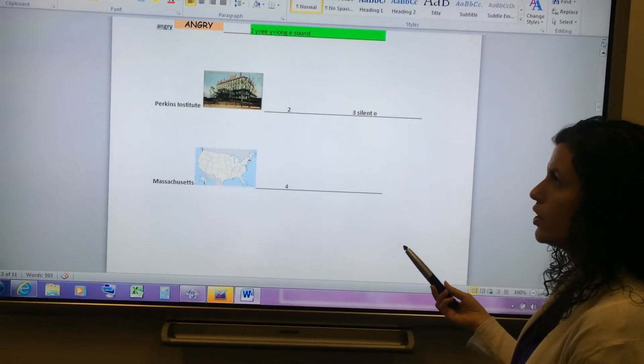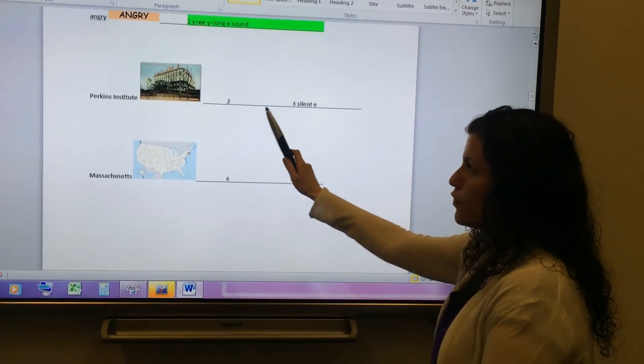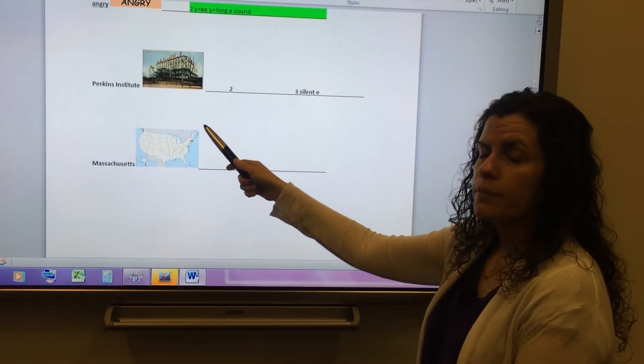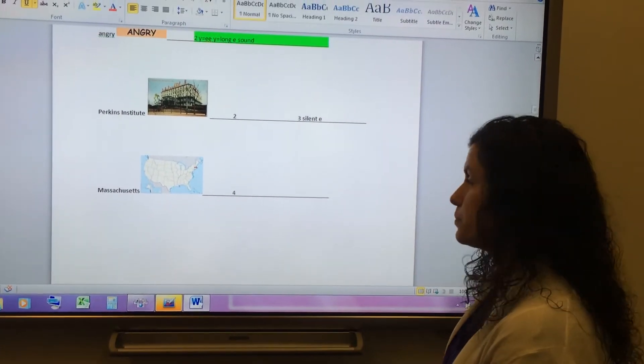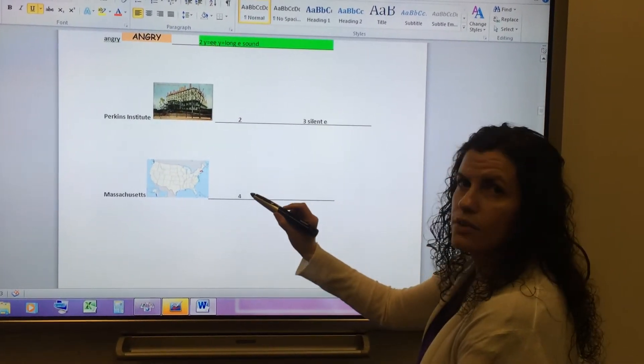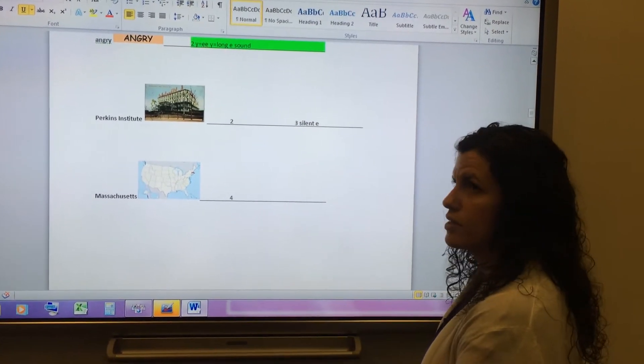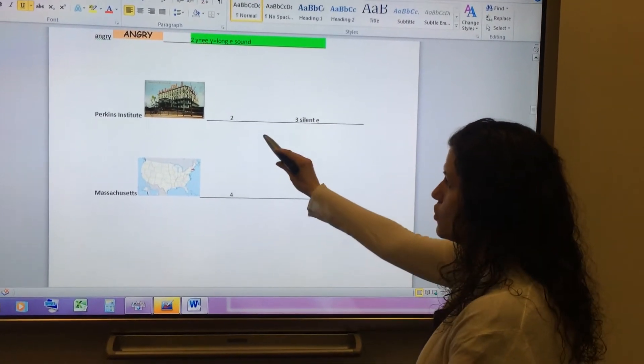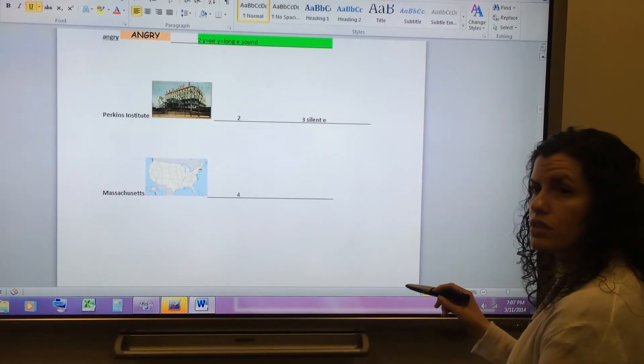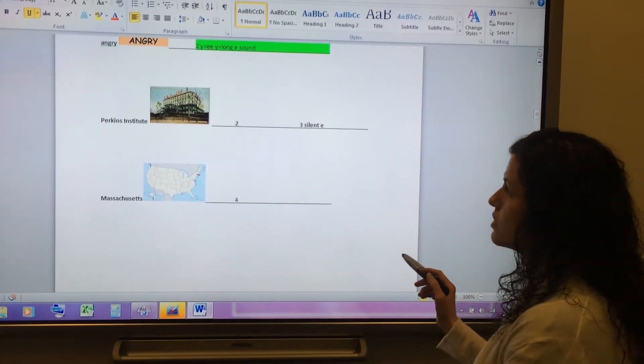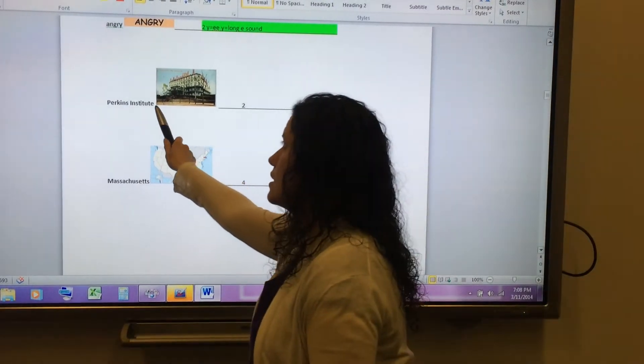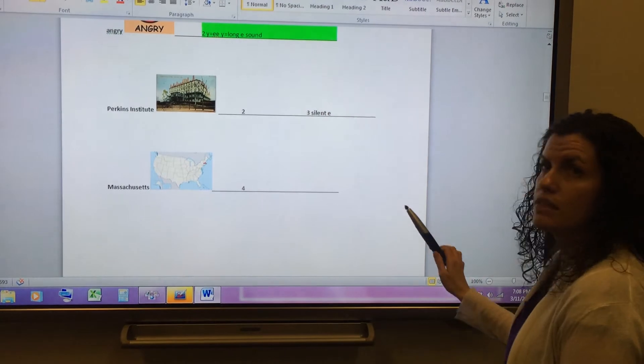Here there are two words. So I split it up. The first word, this is the name of the school that Helen's teacher, Ann, came from. The first word is Perkins. Two vowel sounds. The E and the I. Both short sounds. Perkins. Two syllables. Institute. Institute. Institute. Three syllables. Three sounds. And this E on the end is silent. We don't pronounce this E. This is a silent E. So I wrote silent E there, next to the three.